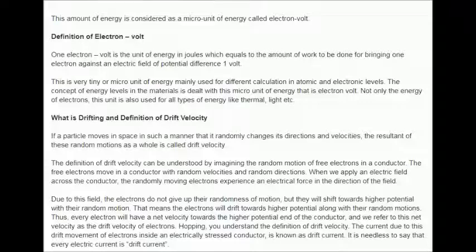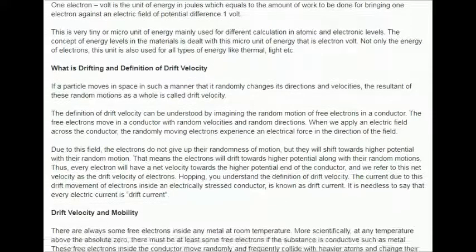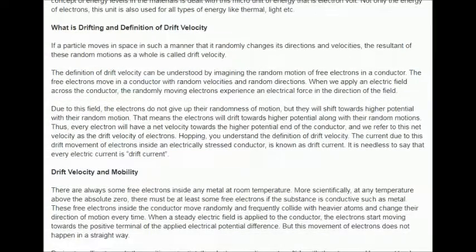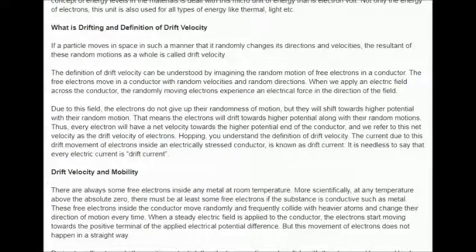That means the electrons will drift towards higher potential along with their random motions. Thus, every electron will have a net velocity towards the higher potential end of the conductor, and we refer to this net velocity as the drift velocity of electrons. Hoping you understand the definition of drift velocity.